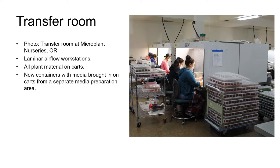The planting and division of plant material is done in a transfer room. In the photo you can see a small section of the transfer room at Micro Plant Nurseries in Oregon. All the work is done at laminar airflow workstations and workers wear surgical masks to reduce the risk of contaminating the plant material — this is nothing to do with COVID. The temperature in the transfer room is usually kept fairly cool; the technician on the right has a blanket over her legs because the lab is so cool. In many labs the technicians also wear lab coats and head coverings. The plant material to be worked on is brought in on carts, and containers with medium in them are also brought in from a separate media preparation area.